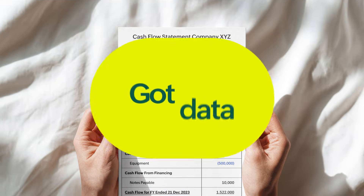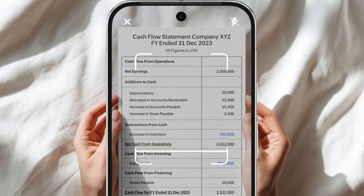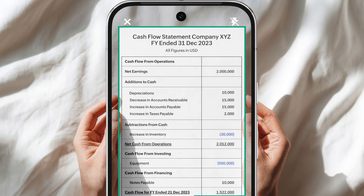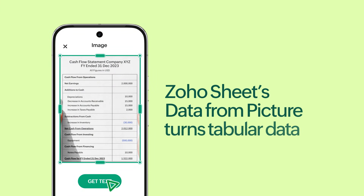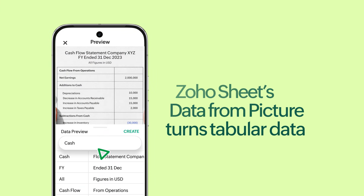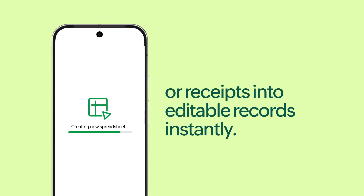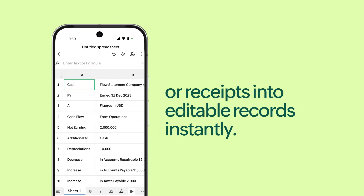Got data on paper? Just snap a pic. Zoho Sheet's Data from Picture turns tabular data or receipts into editable records instantly.